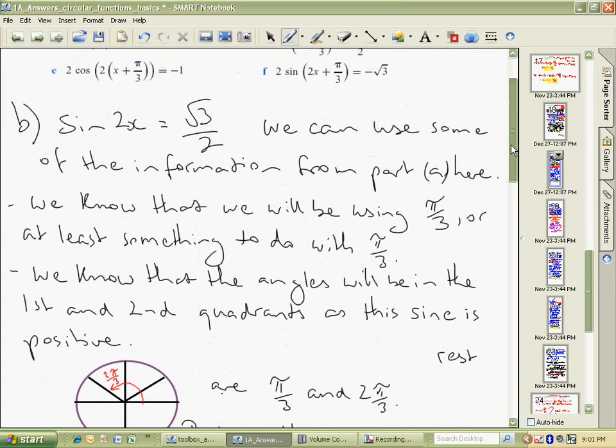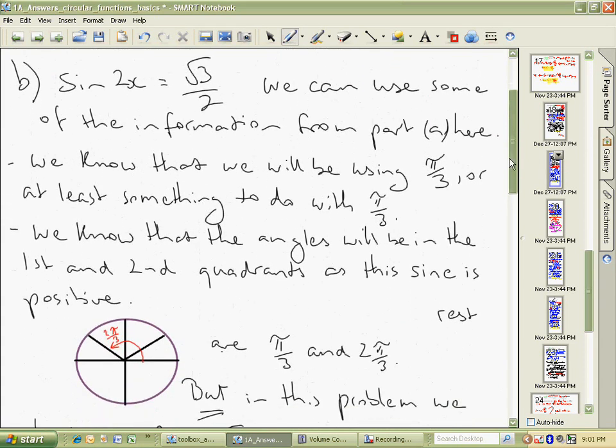And in doing that we can see that this time we want it to be positive so it's here. There's our first π on 3, and then there's our other π on 3, which in reality is the angle 2π on 3. So both of those would give us √3 on 2.